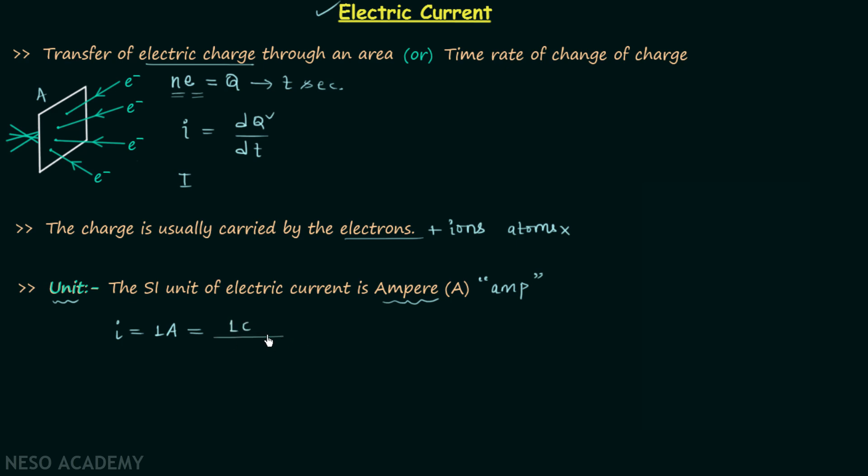1 ampere current equals 1 Coulomb of charge passing through 1 square meter area in 1 second, and we know 1 Coulomb of charge is obtained when 6.24 × 10^18 electrons are crossing 1 square meter area in 1 second.